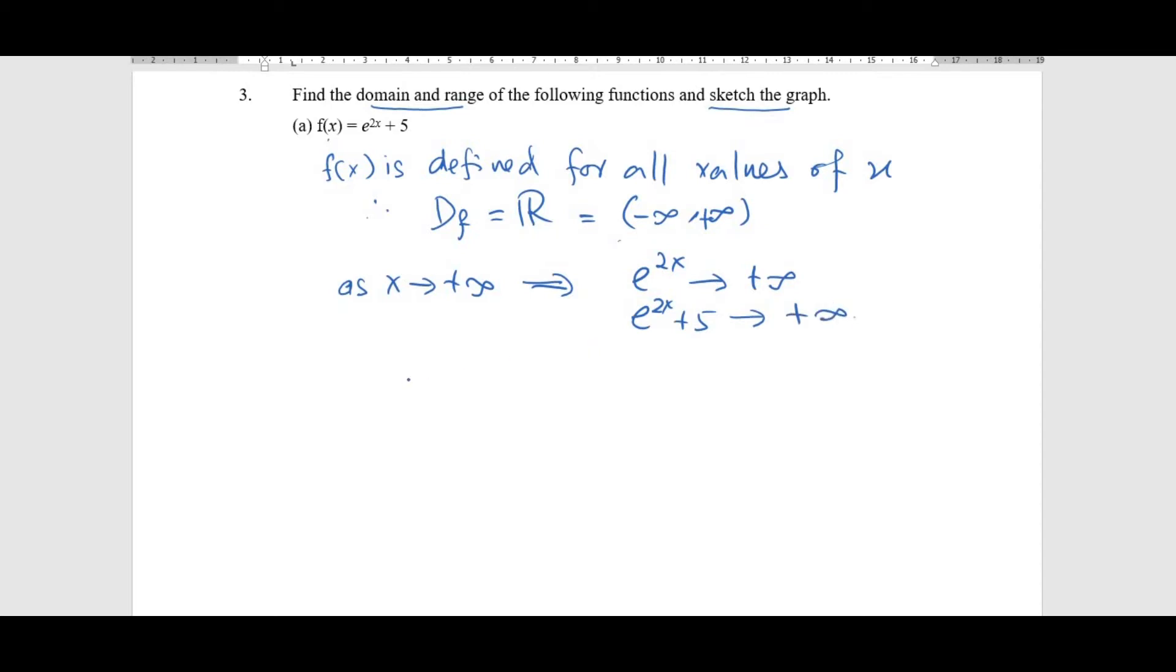But as x approaches negative infinity, meaning x gets smaller and smaller, e^(2x) will approach 0. Therefore, e^(2x) + 5 will approach 0 + 5, which equals 5. So you can say that the range of f is from 5 to infinity, but 5 is not included. Is that clear?